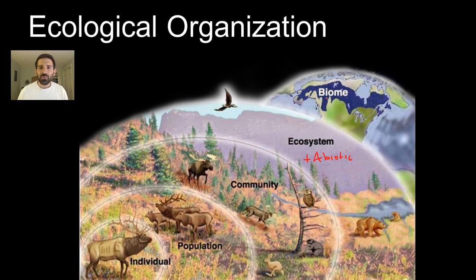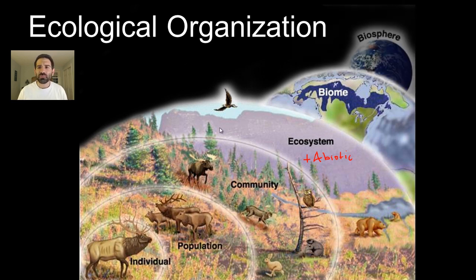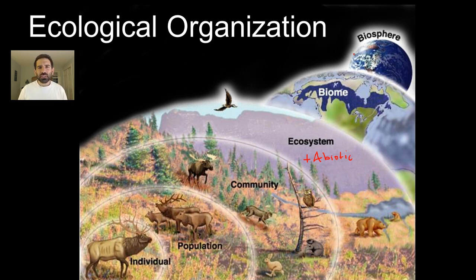The next level is the biome, and biomes are regions of Earth that have similar climate, and they're usually a collection of different ecosystems. So this is probably the taiga, which includes evergreen trees. As we back up all the way, we see Earth, or the biosphere. And if you could shrink down Earth so that it sat in your hand like an apple, the part that actually supports life is about the thickness of the skin of that apple — so it's a very delicate biosphere.